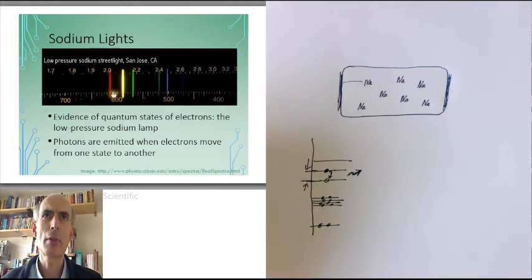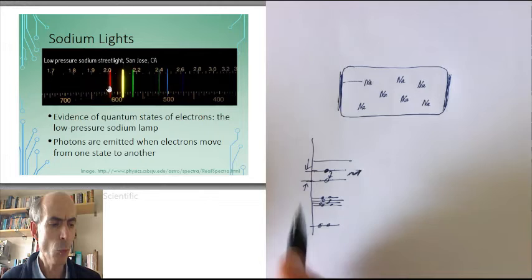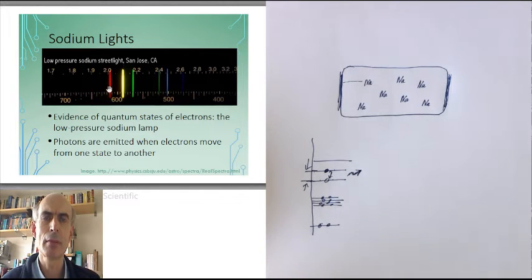However, there are some other weaker bands of colour as well. Where do they come from?